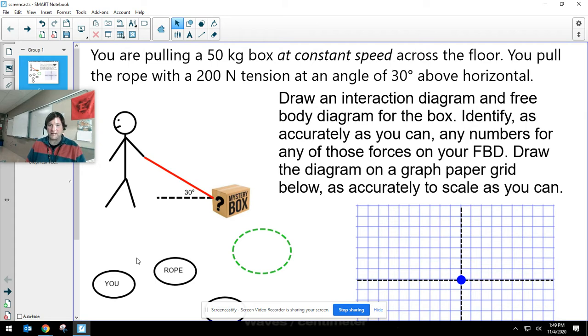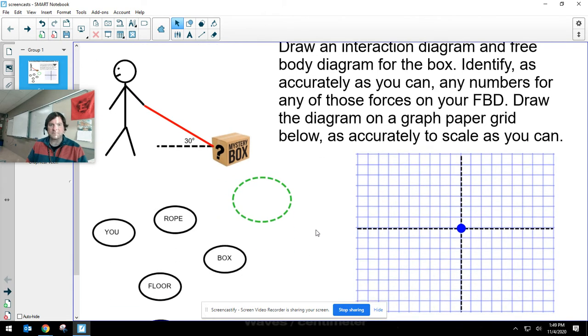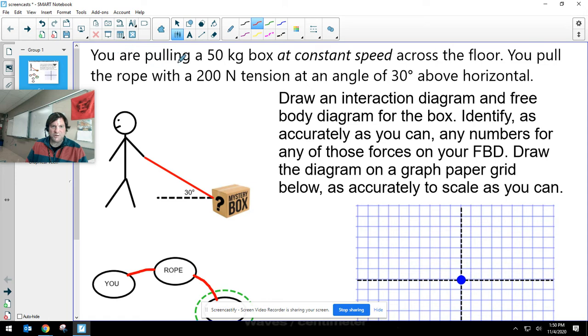That tension force is always going to act along the line of the string or the rope. Making this interaction diagram, I pre-made some circles so I wouldn't have to draw them all, and I'm going to be interested in a free body diagram for the box. So I'm going to identify the box as the thing I'm really interested in. What interactions are there? Well, I am pulling on the rope, so the rope is pulling on the box.